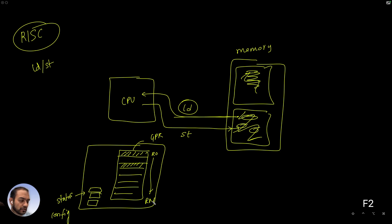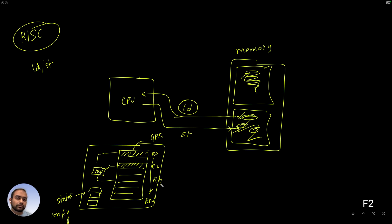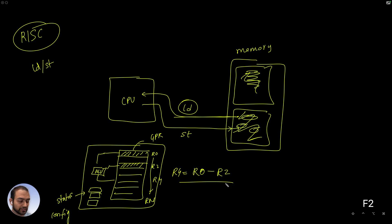Let's say the computation needs to be performed on R0 and R2. So let's say we perform a subtraction. These are fed into the ALU and the subtraction is performed. The answer of that subtraction is also put back into some register, let's say R4. The way we control which register to read and which register to write has to do with the instructions — the code, essentially. So R0 minus R2, and R4 gets the result. This is the computation being performed.